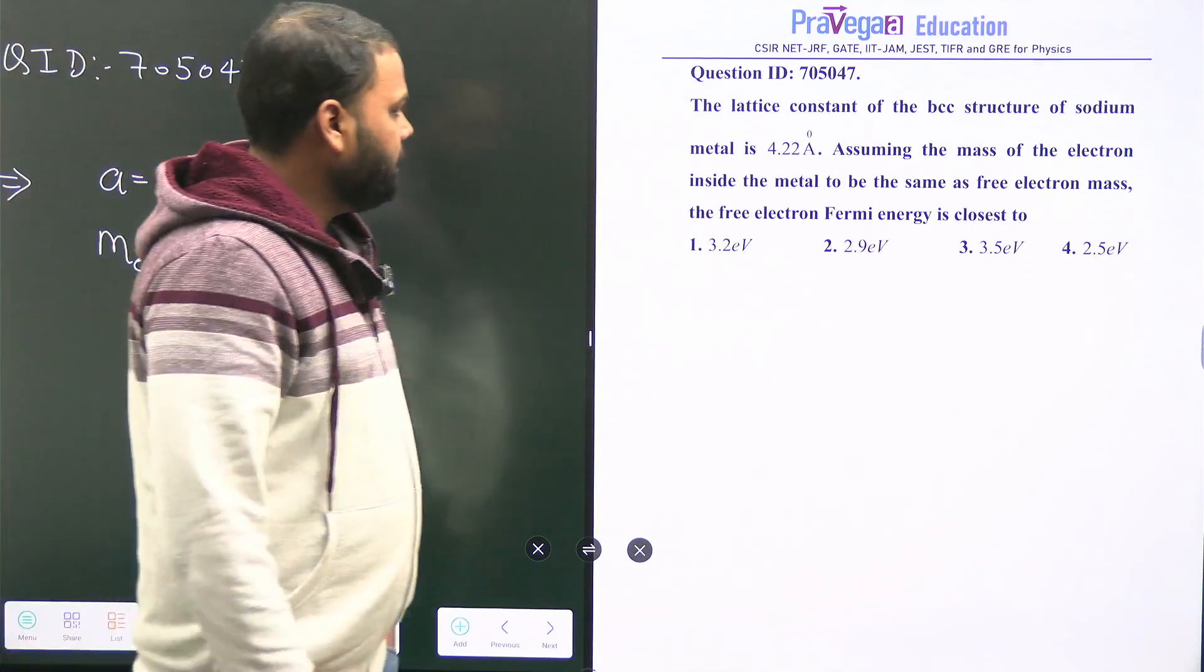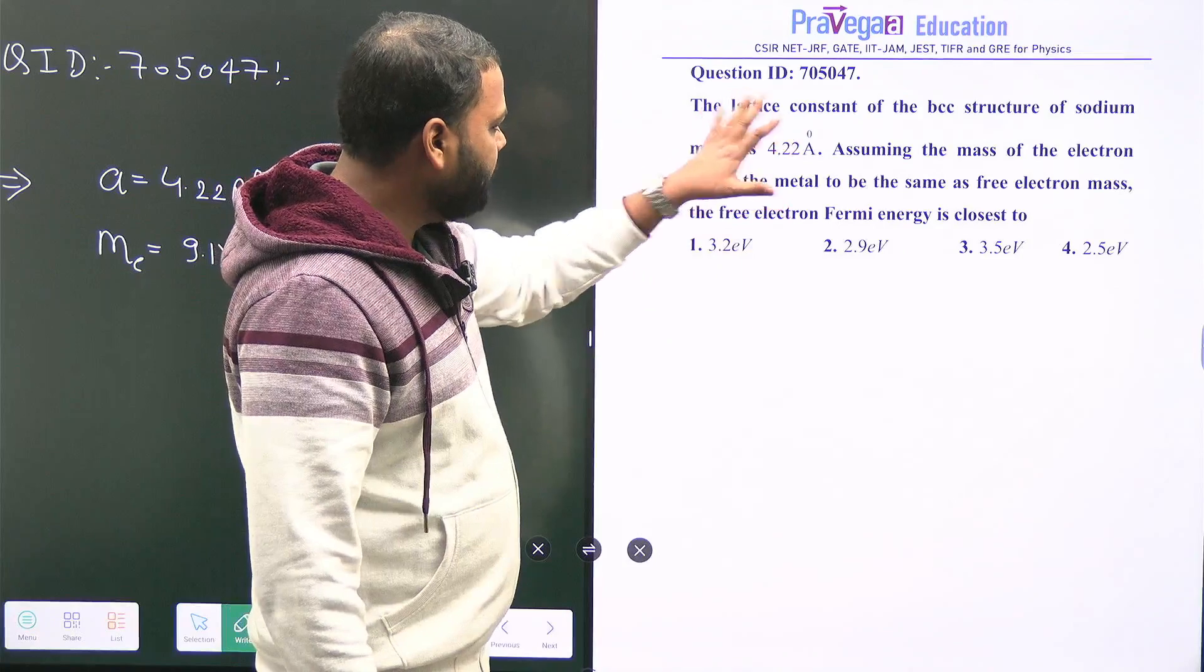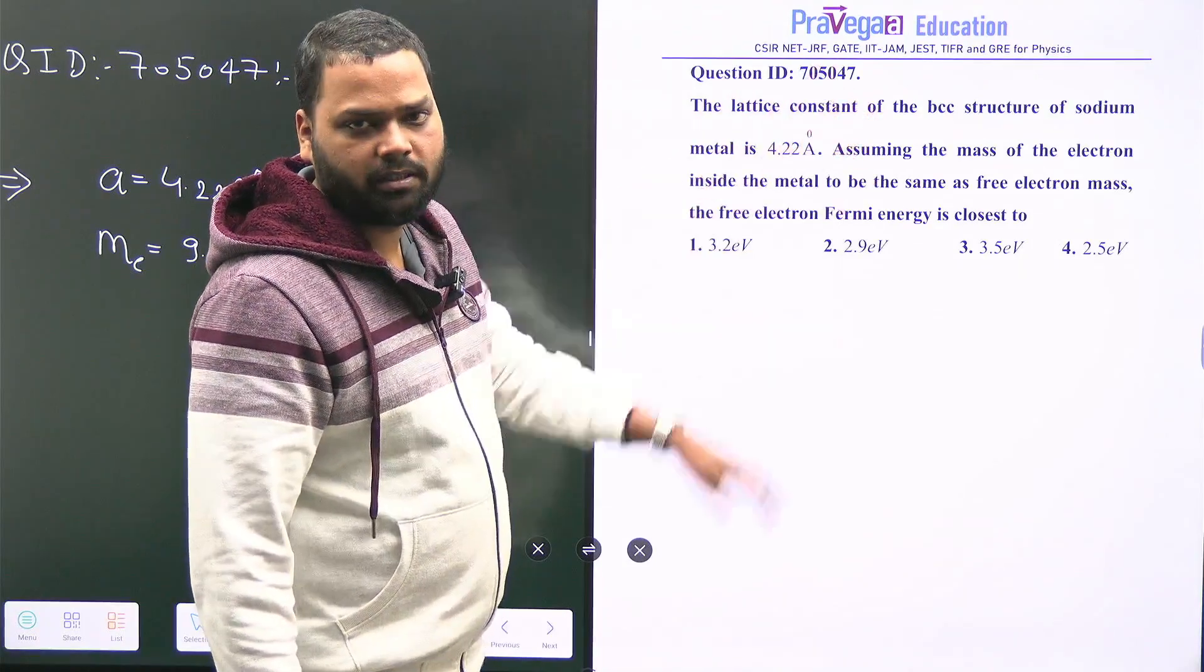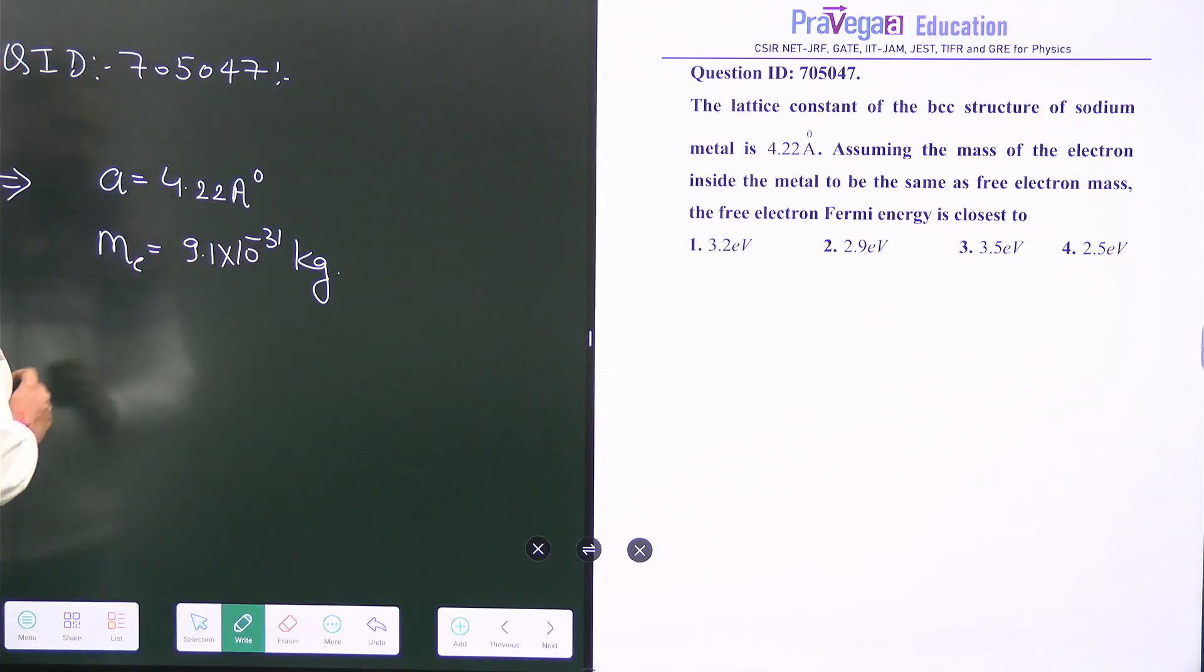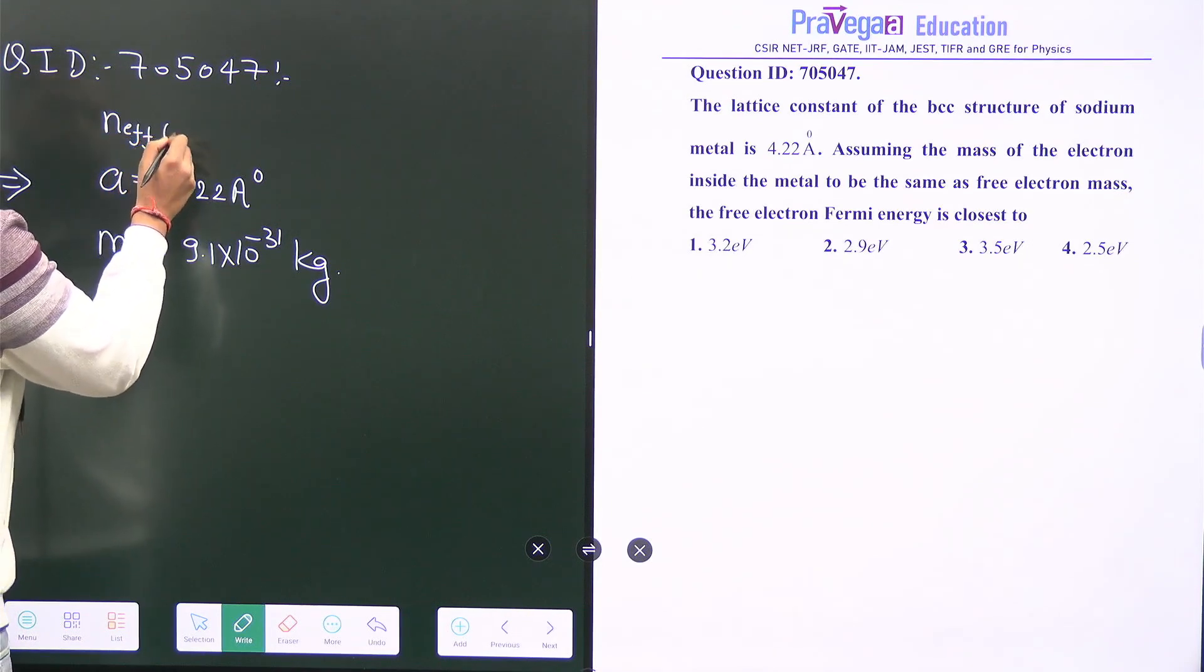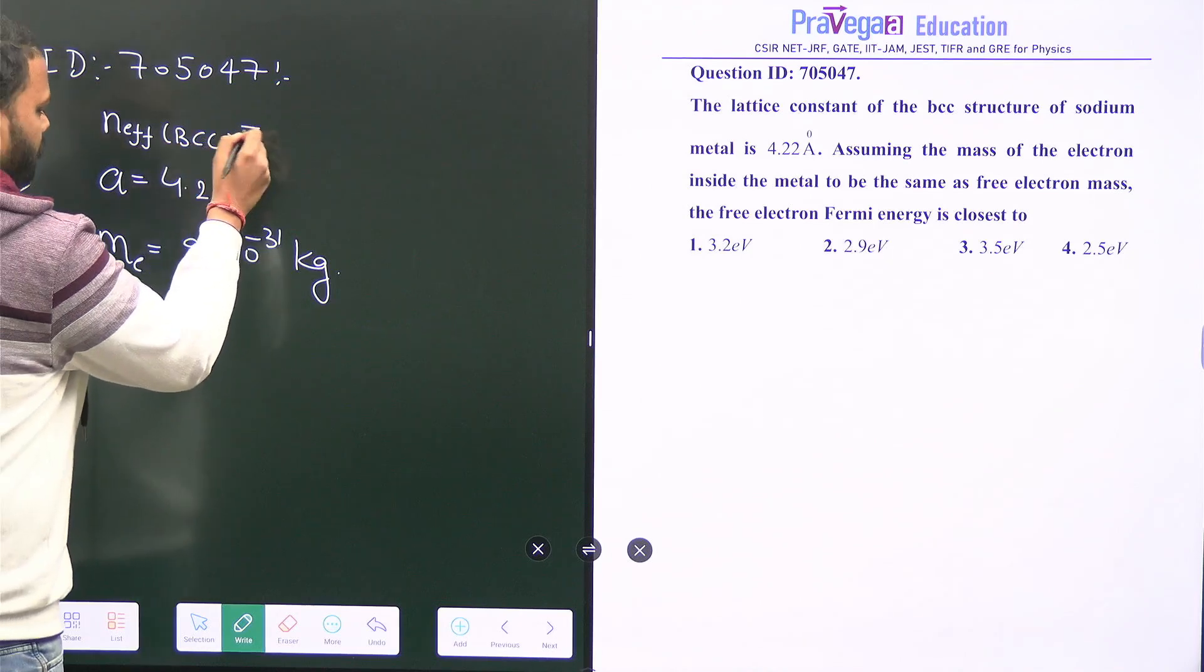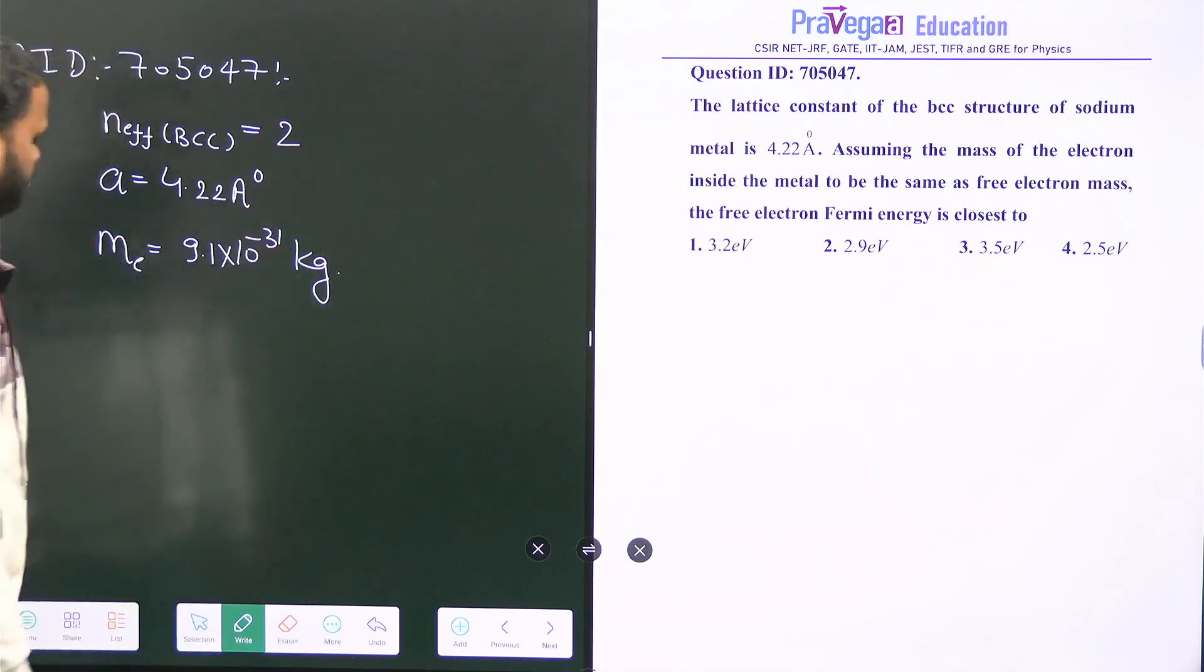In the question it's clearly mentioned that the structure is BCC, body-centered cubic, so we need the effective number of atoms for the BCC crystal, which we all know is equal to 2.